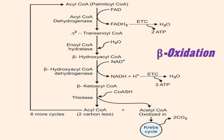This shorter acyl-CoA undergoes the same four steps: dehydrogenation, hydration, oxidation, and thiolytic cleavage. Again, two carbons are separated as acetyl-CoA. For a 16-carbon saturated fatty acid, this process continues for seven cycles in total, converting all carbons into eight molecules of acetyl-CoA.